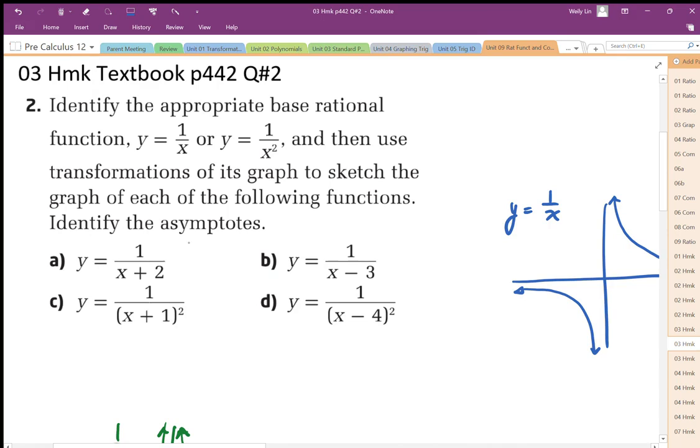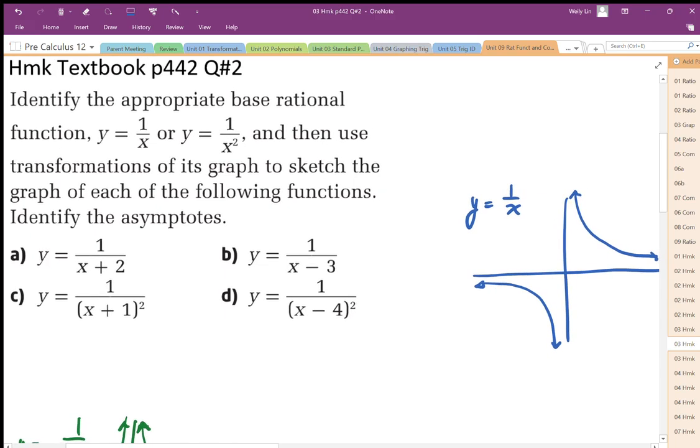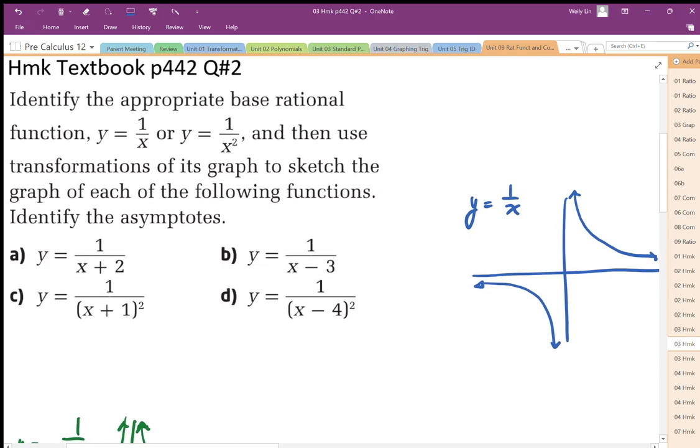First, for parts a and b, the base function is 1 over x, the one shown here in blue. When we look at part a, we have a horizontal shift of negative 2.